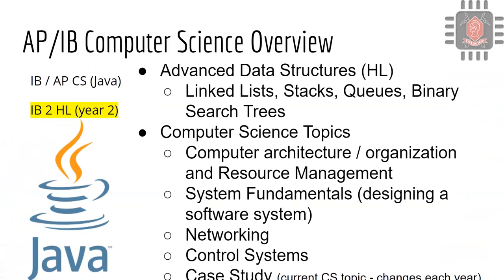Then we have a second-year continuation: IB Computer Science 2 HL. If you finish AP IB Computer Science, you can take IB Computer Science 2 HL your senior year. In this class, we continue with object-oriented programming and Java, computational thinking, and advanced topics called data structures — things like linked lists, stacks, queues, and binary search trees. We also cover computer architecture, organization, resource management, memory and CPU sharing, designing systems, computer networks, control systems, and a case study each year on a current computer science topic.